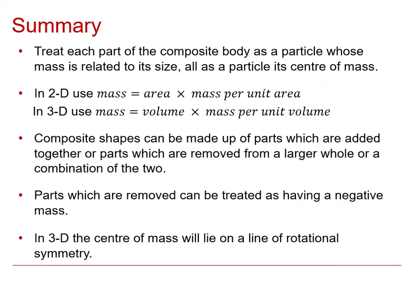Okay, now let's just summarise where we've got to. We treat each part of the composite body as a particle at its centre of mass. Its mass comes from its volume, and we use its density. And the two calculations, that would be for a three-dimensional one, but we've covered in principle the two-dimensional, where we have area times mass per unit area, and three-dimensional, where it's volume times mass per unit volume. And we can make up composite shapes by parts, added together or removed, remembering to use negative mass if it's removal.